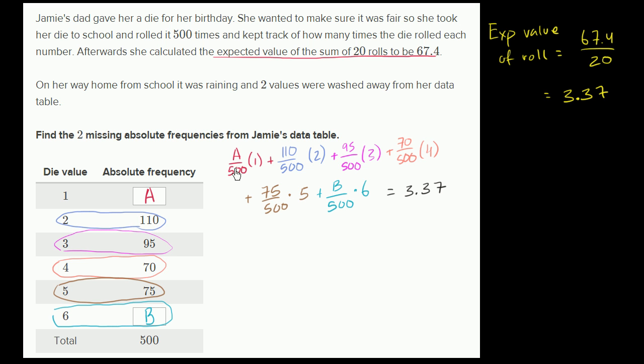So one thing that we can do, since we have all these 500s in this denominator right over here, let's multiply both sides of this equation times 500. If we do that, the left hand side becomes, well 500 times A over 500 is just going to be A, plus 110, plus 110 times two, so it's going to be 220, plus 95 times three, that's going to be 15 less than 300, so it's going to be plus 285, plus 285.